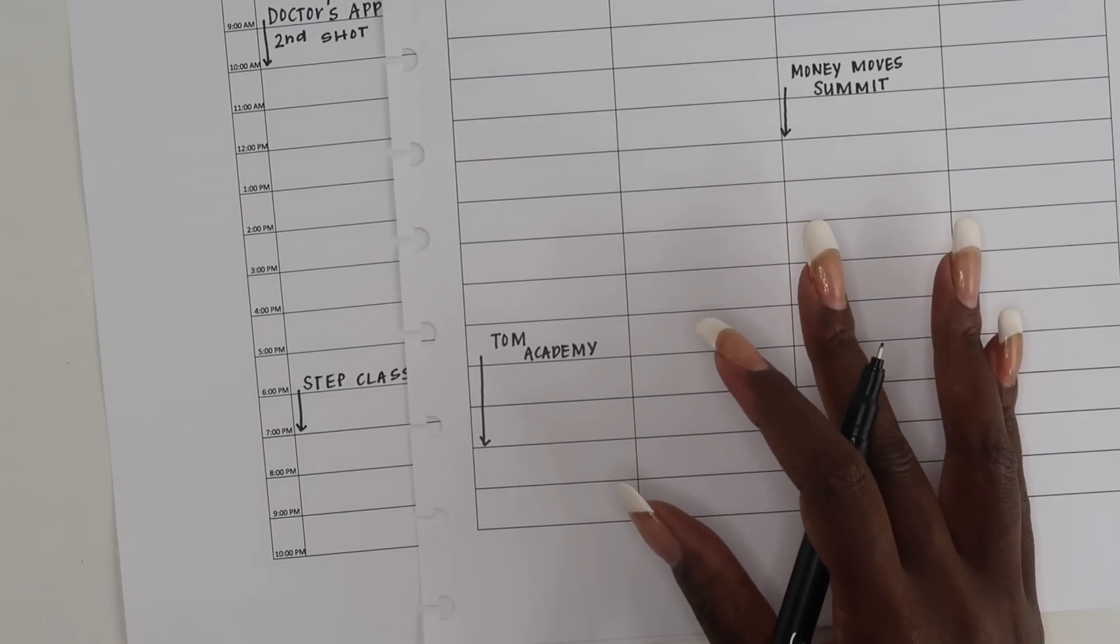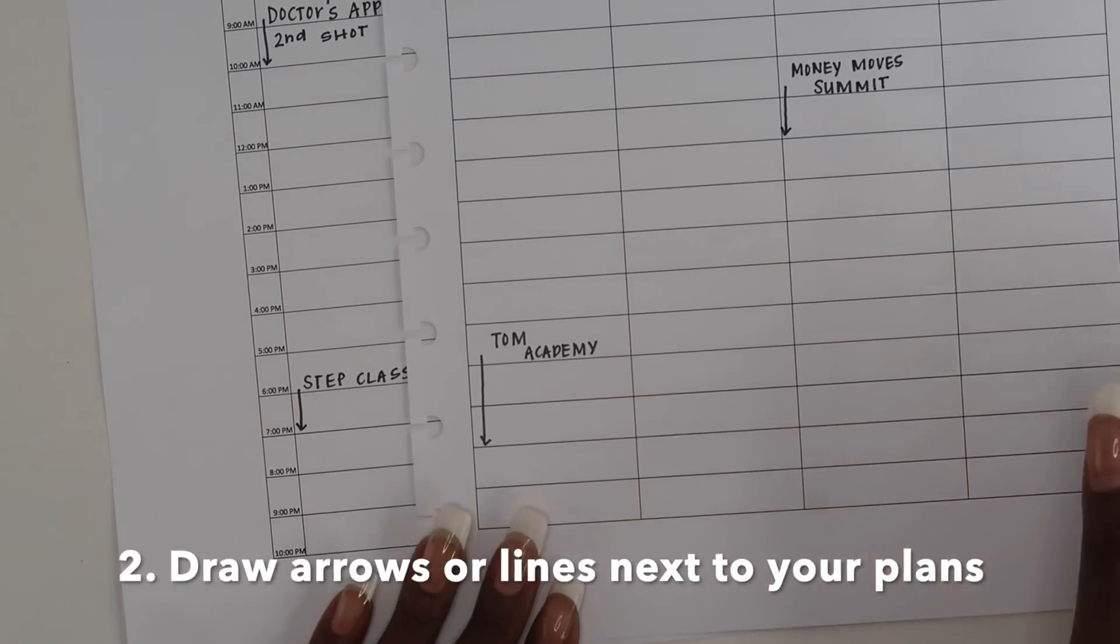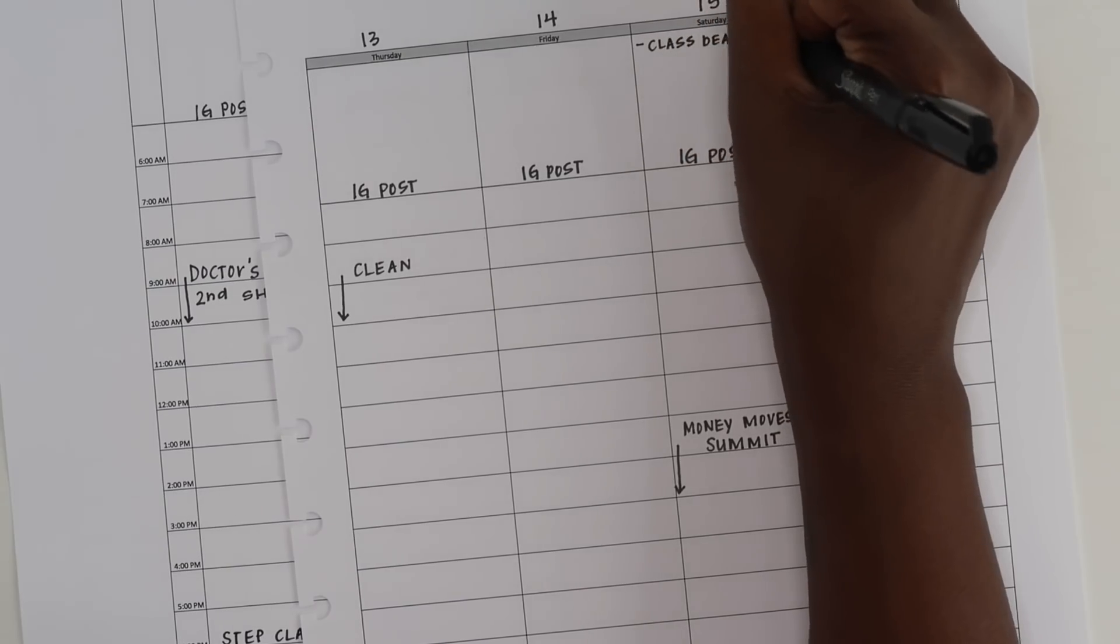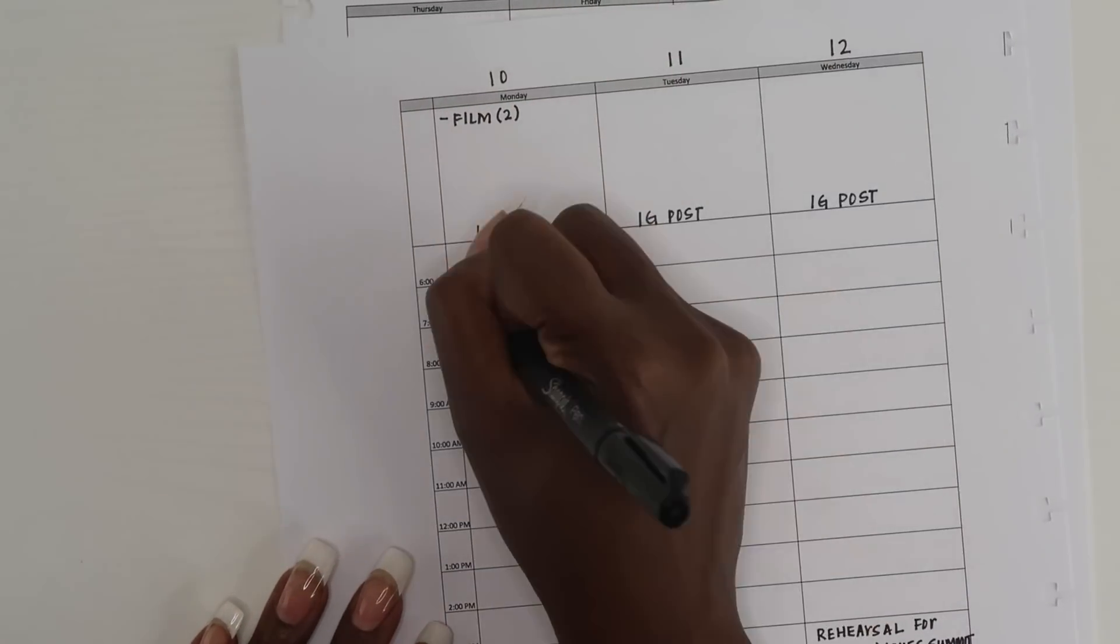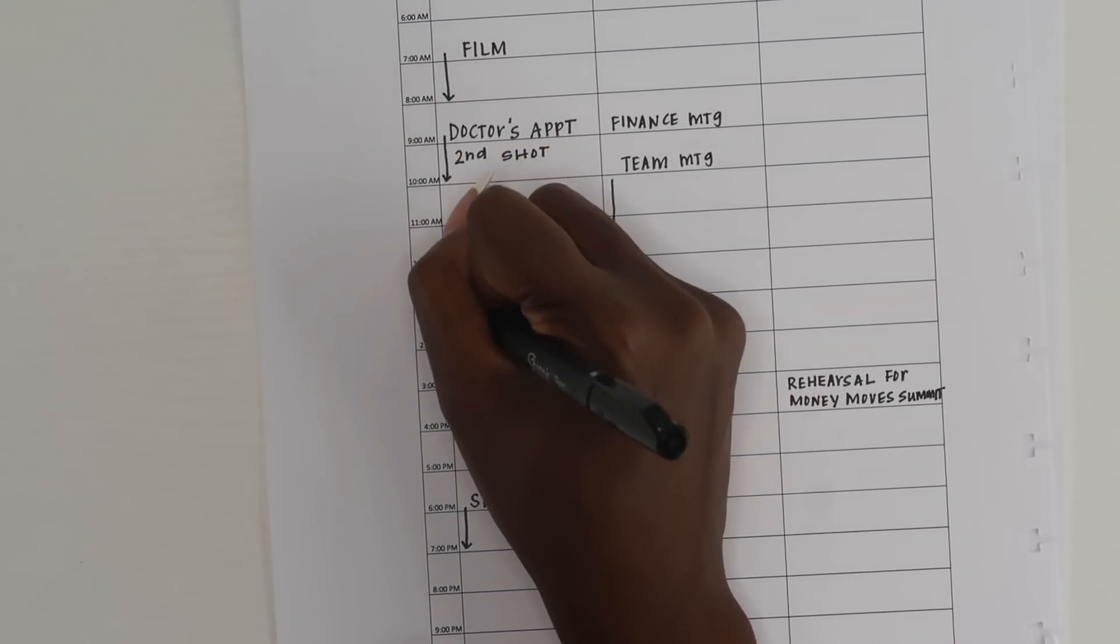My second tip is specifically for us hourly planner girls, and that is to draw your arrow next to your plans, either to the right of your plans or to the left of your plans, instead of directly down the middle.